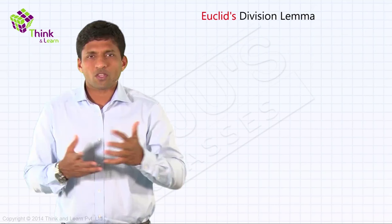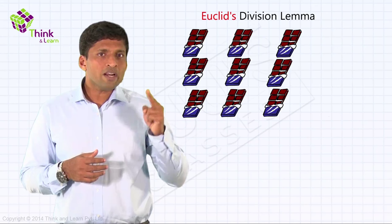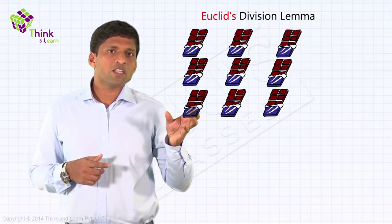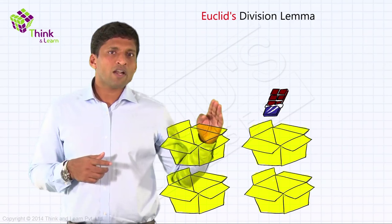If I change, instead of seven chocolates, if we have nine chocolates and if you want to put two in a box, two per box, two chocolates per box, how many boxes will be there? One, two, three, four. If I put two each, and one chocolate will still be left out.